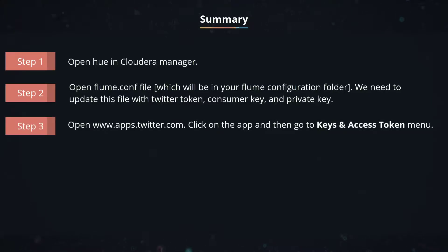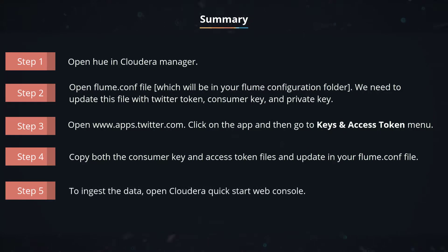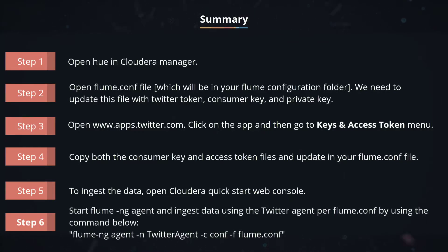Step 3: Open www.apps.twitter.com, click on the app, and then go to the Keys and Access Token menu. Step 4: Copy both the Consumer Key and Access Token and update your flume.conf file. Step 5: To ingest the data, open Cloudera QuickStart Web Console.